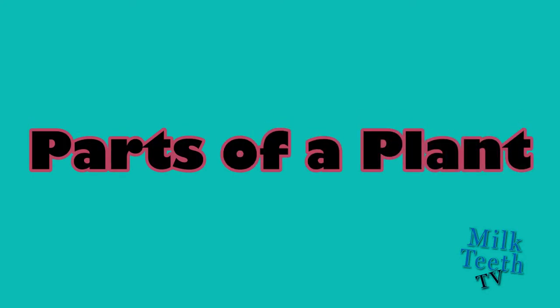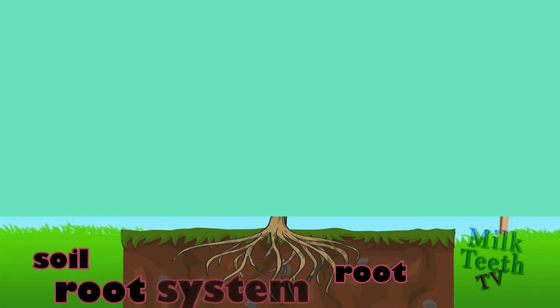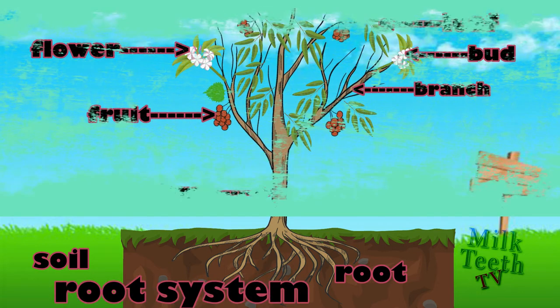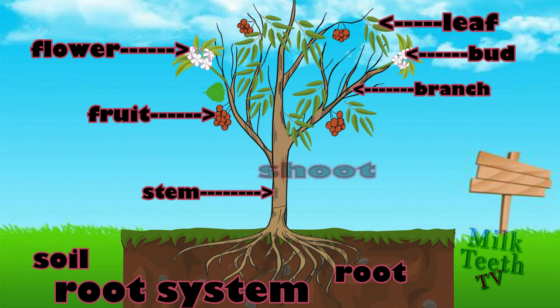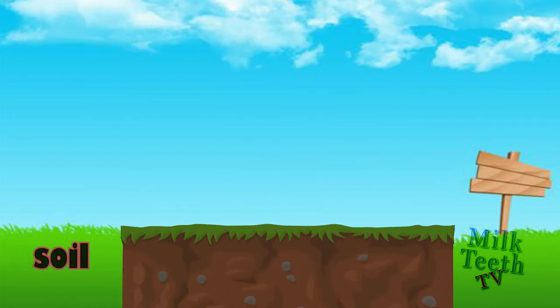Parts of a plant. A plant grows in the soil or mud. The part of the plant below the soil is called the root system. The part of the plant above the ground or soil is called the shoot system.